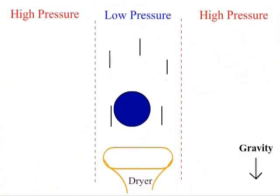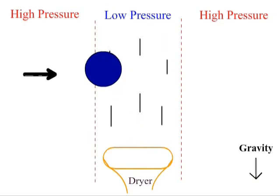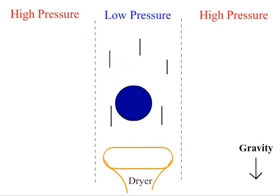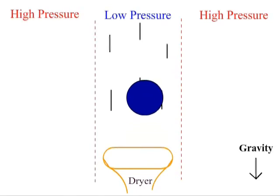By Bernoulli's principle, the dryer sets up a vertically low pressure region above it by the flowing air fluid. This region is surrounded by a region of high pressure.